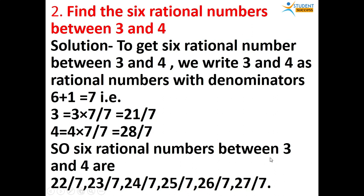So the 6 rational numbers between 3 and 4 are 22 by 7, 23 by 7, 24 by 7, 25 by 7, 26 by 7, and 27 by 7. For example, if we want to find 5 rational numbers, we multiply the given numbers with 5 plus 1, that is 6, dividing over 6.